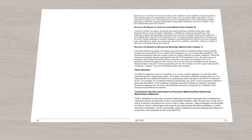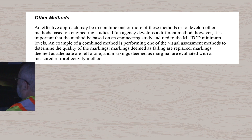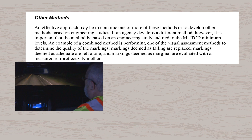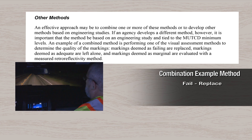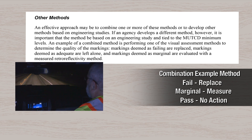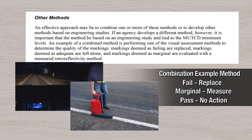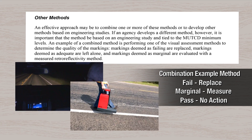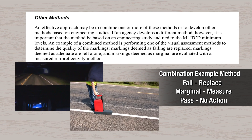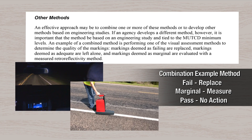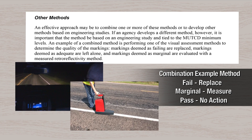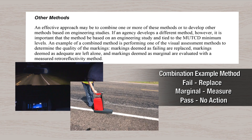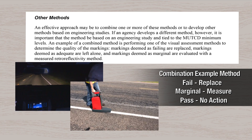An effective approach for your agency may be to combine one or more of these methods. One example of a combined method is performing one of the visual nighttime inspection methods, followed by the measurement method for markings that do not clearly pass or fail the visual inspection. As with all the methods, the goal is to replace markings before they reach minimum levels.